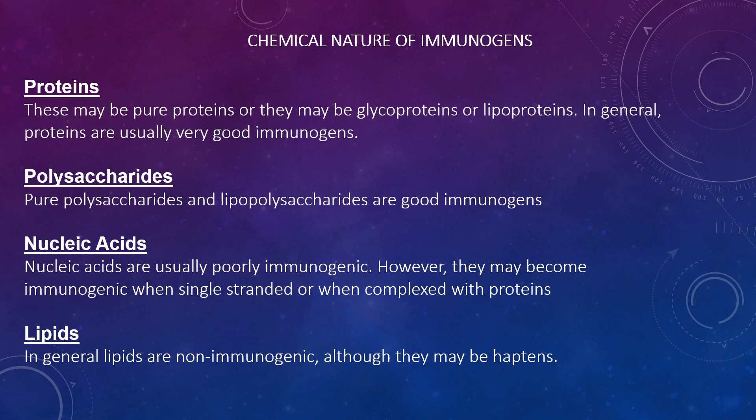The types of immunogens include proteins, polysaccharides, nucleic acids, and lipids. The vast majority of immunogens are proteins — these may be pure proteins, glycoproteins, or lipoproteins. In general, proteins are usually very good immunogens.